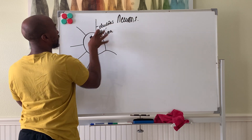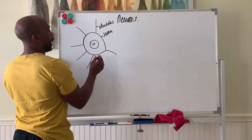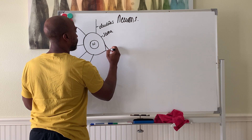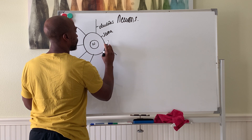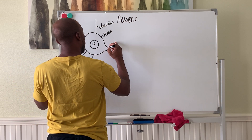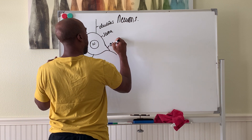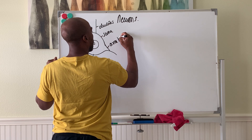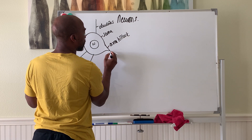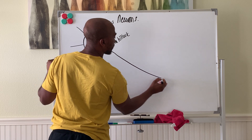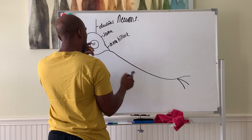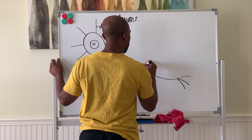The dendrites attach to the soma, and then the soma tapers to form the axon. Right where it tapers, we call that your axon hillock, and then the singular long process that extends from the soma we call your axon.